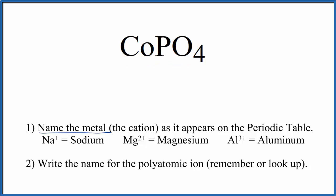First, we write the name for the metal as it appears on the periodic table. CO, that's cobalt.